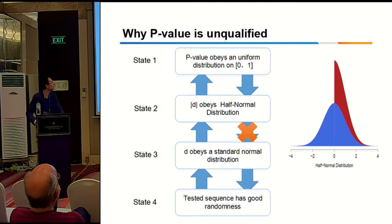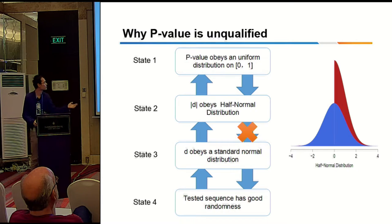To better understand this problem, I show the logical relationship between these probabilities. Stage one: P-values come from uniform distribution. Stage two: after absolute value, we get half-normal distribution. Stage three: this should be standard normal distribution. Stage four: testing sequence has two boundaries, that is our null hypothesis. We can see that stage one and two are intro, and stage three and four is outro. Stage two and three are not equal. This is the problem.